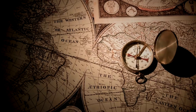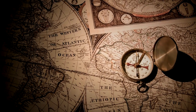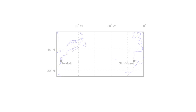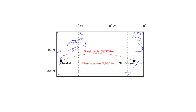Mapping Toolbox supports 3D coordinate transformations in geometric geodesy. As an example of geodesy, you can determine the shortest path between Norfolk, Virginia, and Cape St. Vincent in Portugal, or the direct course, and convert the distance between them to other units such as kilometers.